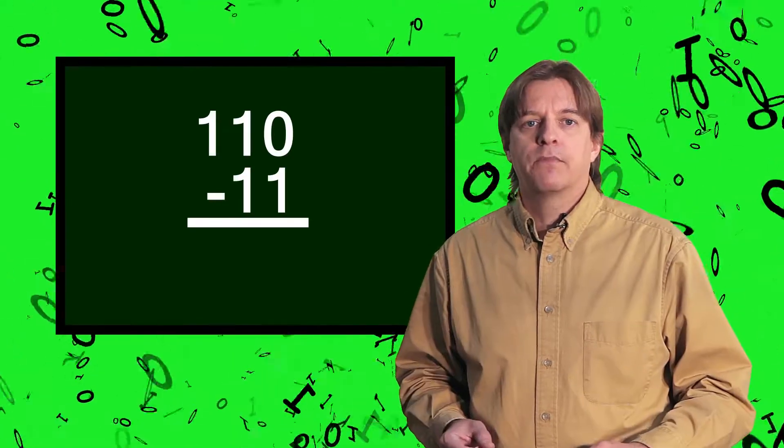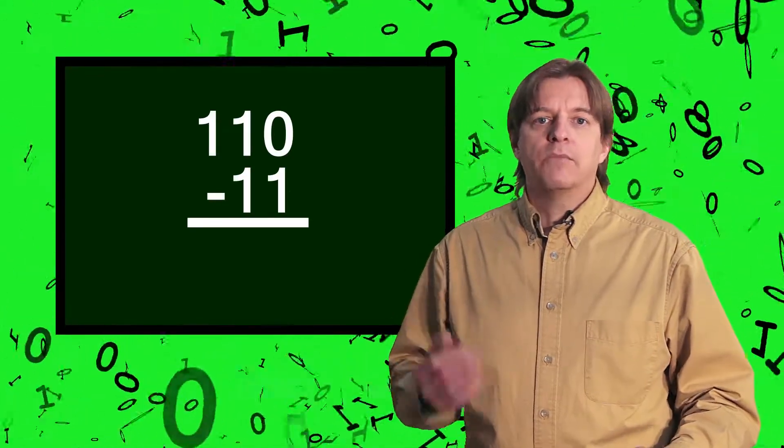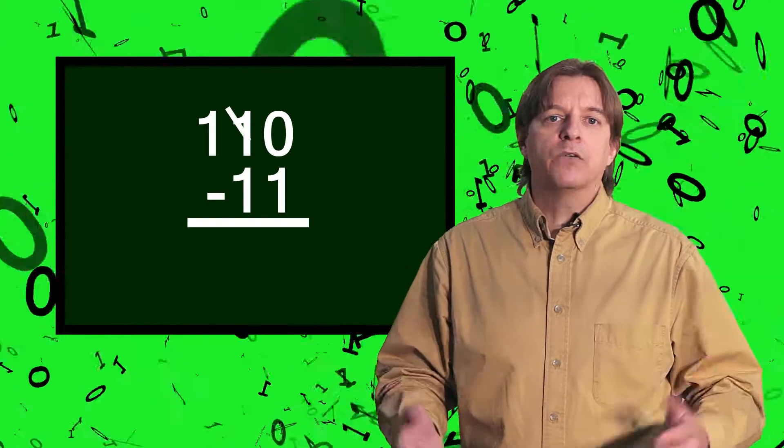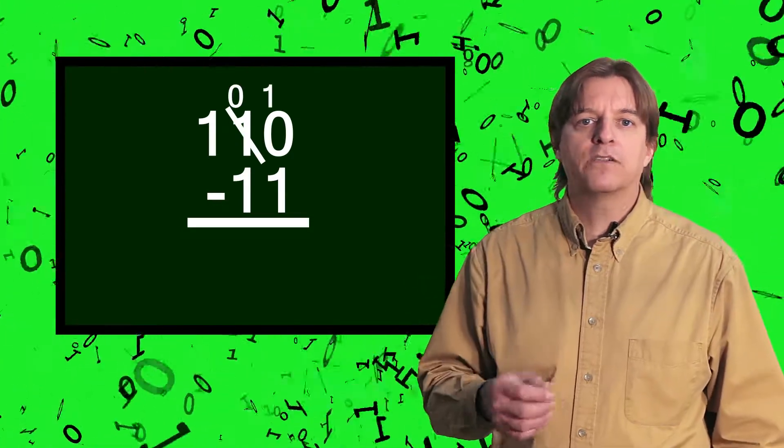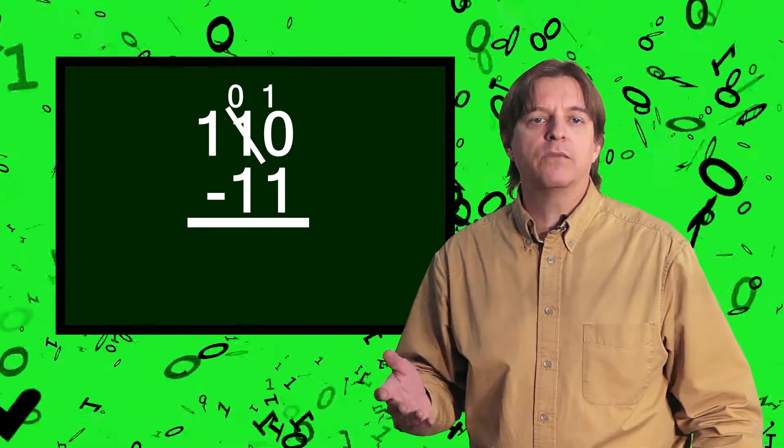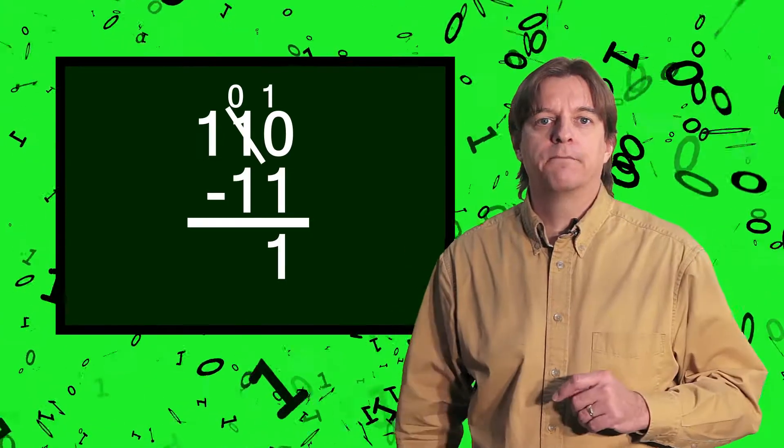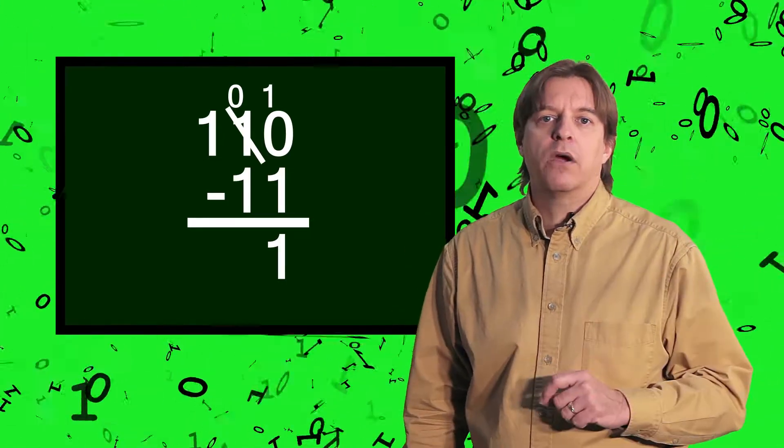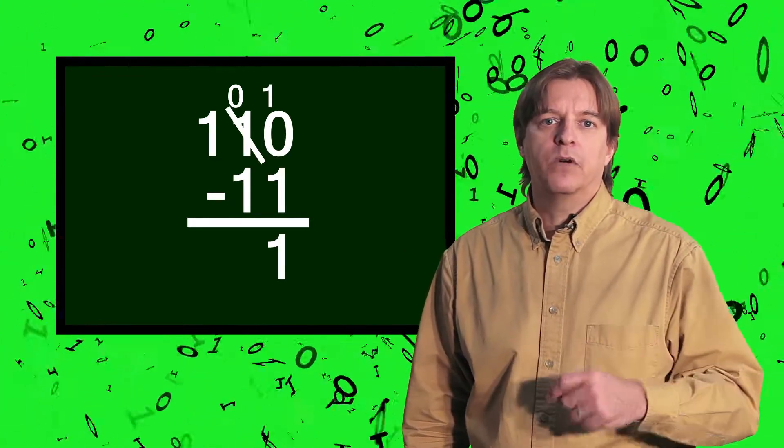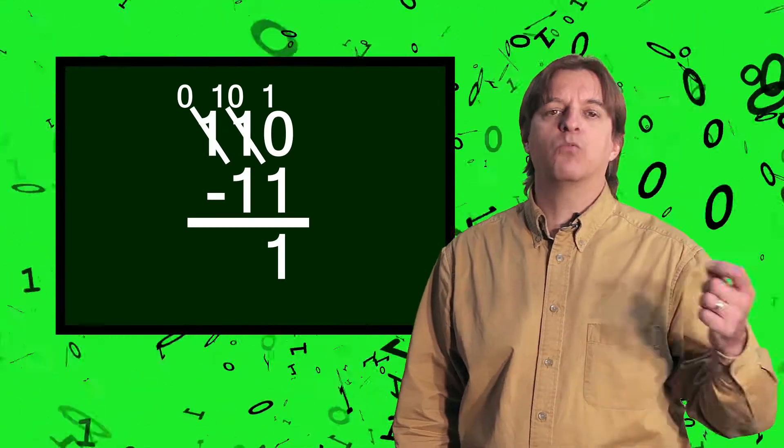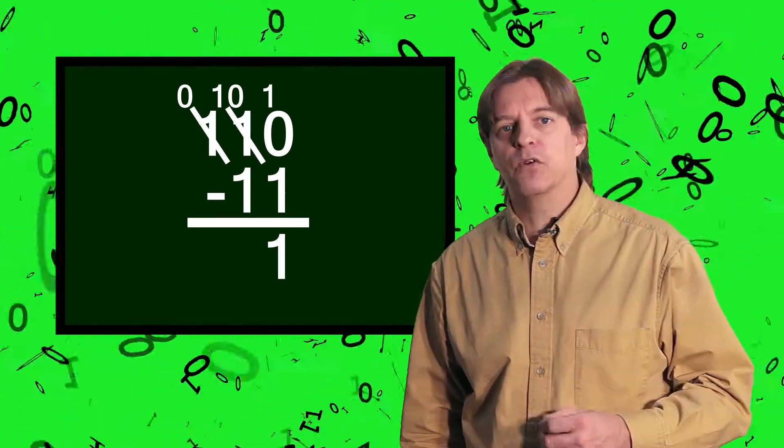Now let's do something with some borrowing. 6-3. The units column is 0-1. We can't do that, so we're going to borrow a 1 from the next column. Now we have 1-0-1, giving a result of 1. Because of the previous borrow, the second column is 0-1. So again we borrow from the next higher column, giving us 1-0-1, with a result of 1.